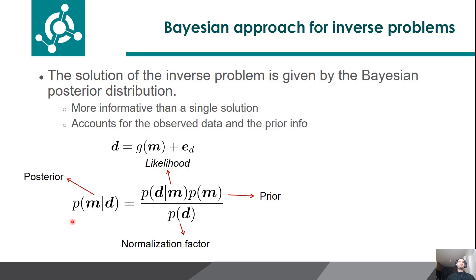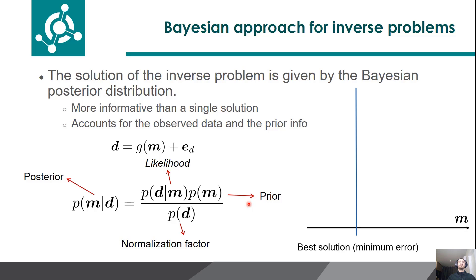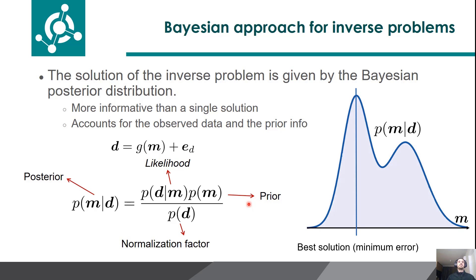In the Bayesian approach, the solution of the inverse problem is given by the posterior distribution — the probability of M given D. We want to obtain this distribution where M is the model parameter and D is the observed data. This distribution is defined by the product of the prior and the likelihood. The likelihood is related to the observed data and the prior is related to prior knowledge about our model. The advantage of the Bayesian approach is that the solution is not given by a single model, but by a probability distribution, which is the most general solution because it gives us information about the uncertainty of the estimations.